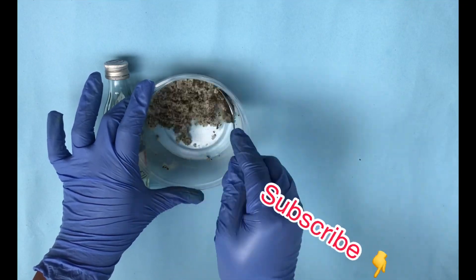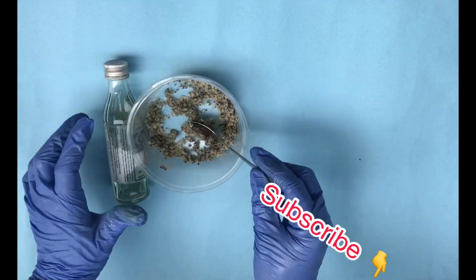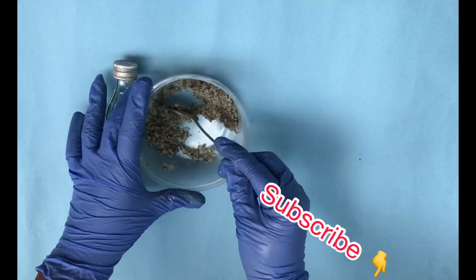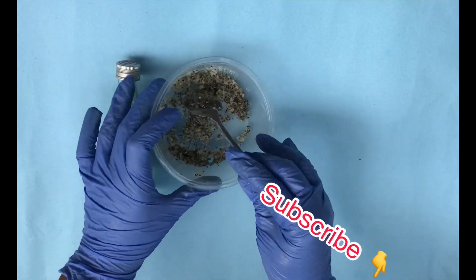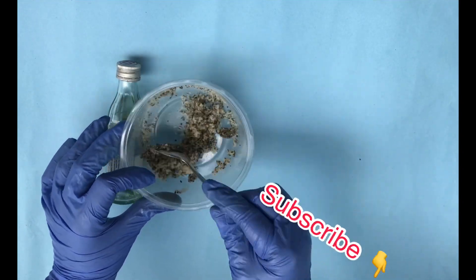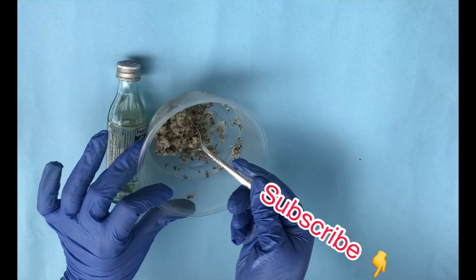Cellulite is lumpy, dimpled flesh on the thighs, hips, buttocks, and stomach. So if you're trying to get rid of cellulite and varicose veins, you should try out this recipe as soon as possible.